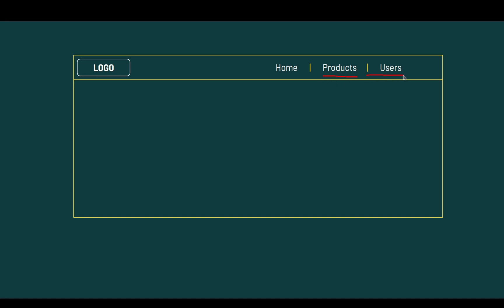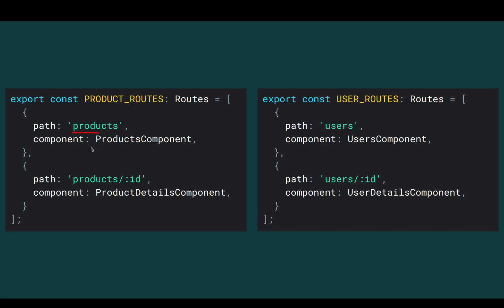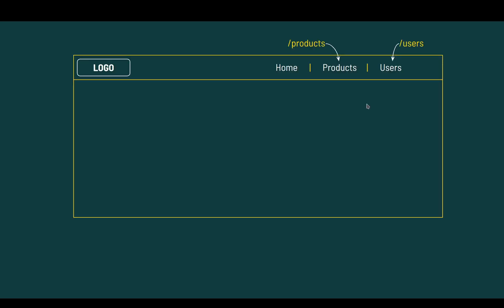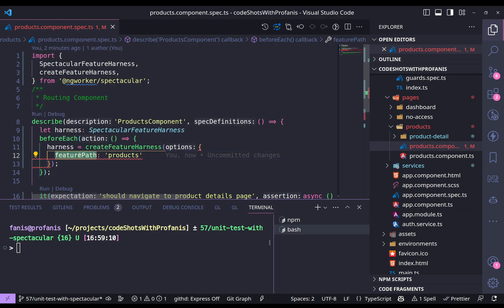Let's focus on the products and users. We can say that this application has two different features: products and users. If we check the routing path configuration, we can see that we have for the product routes: products, which renders the product component, and then products ID, which renders the product details component. The same goes for users. So despite having four different paths, we are referencing only two of them in the navigation menu. We ask the user to navigate to our features — products and users. Each feature has a routing path: slash products and slash users. And this is what we have to provide here into the feature path.